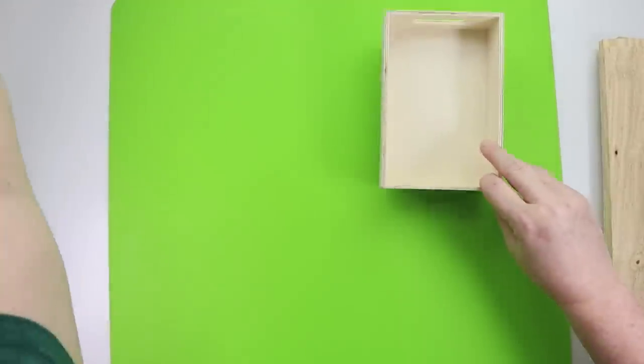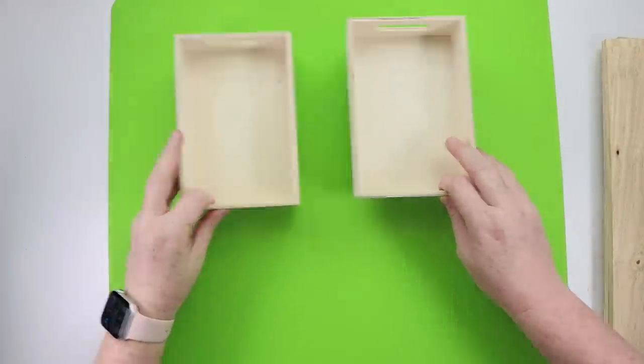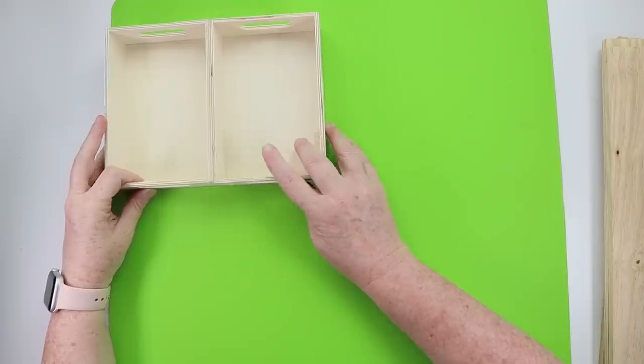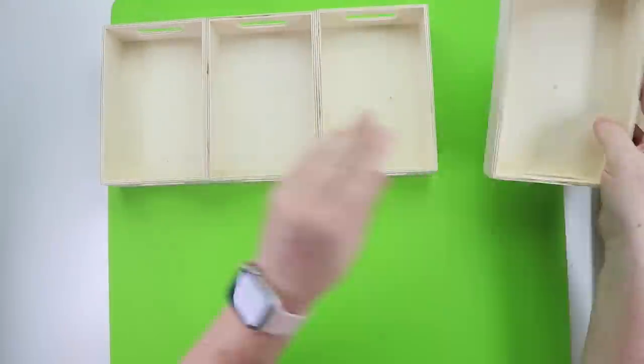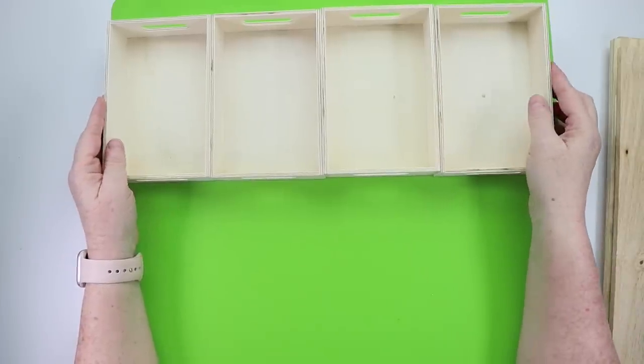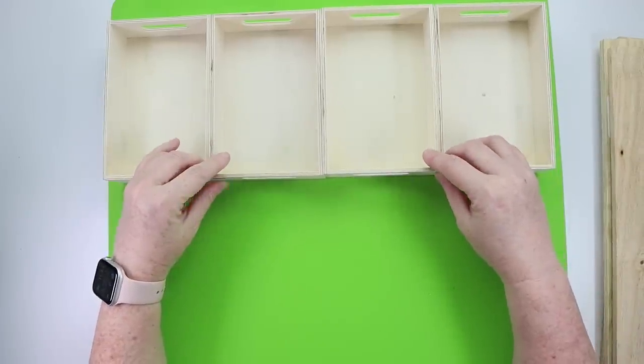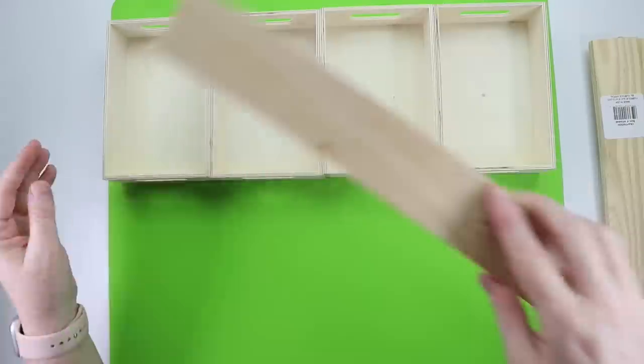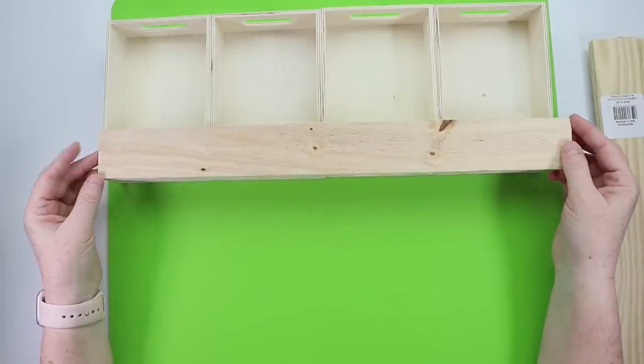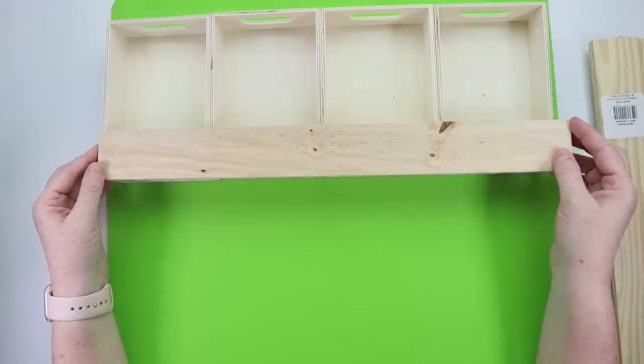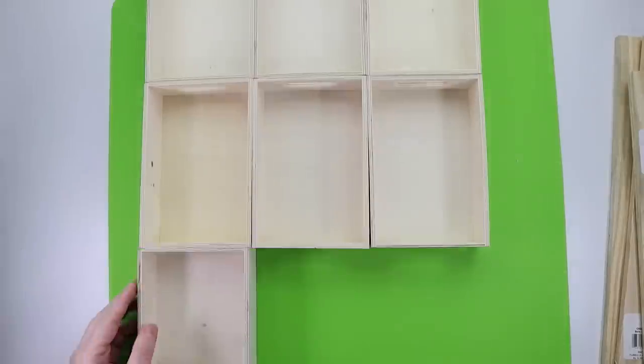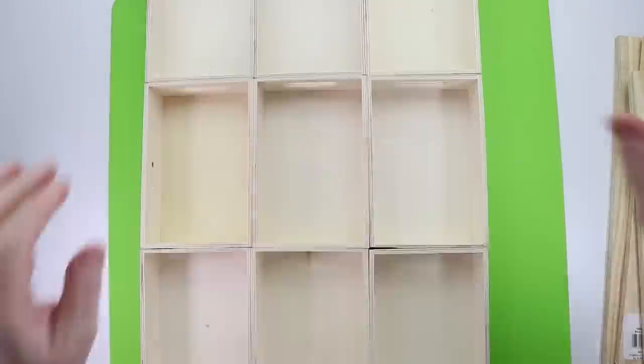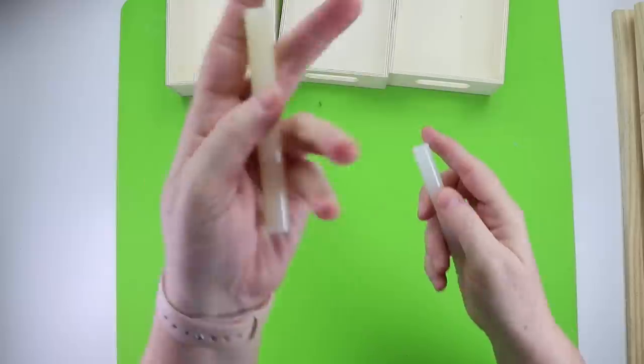For this DIY, you want to pick up some of the Dollar Tree wooden trays. How many you pick up depends on how large you want to make this display. We're making a faux apothecary cabinet, which could either be used for storage, or it could be used to display with the different seasons. And then you also need some of these trim pieces. This is the larger one. Dollar Tree has a couple different sizes. Now, we are working with wood, and because I'm kind of an instant gratification girl, we're going to be using Surebonder's wood hot glue.